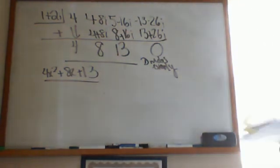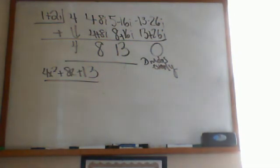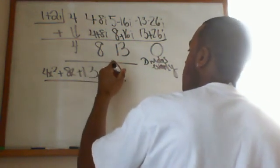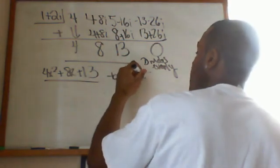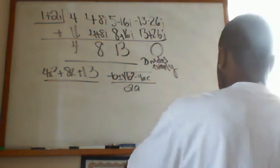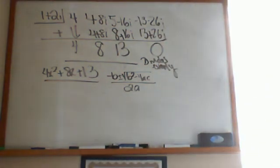As you can see, we cannot factor 4x² + 8x + 13 directly, because no factor combination of 13 and 4 gives 8 as the middle term. So I'm going to use the quadratic formula — negative b plus or minus the square root of b squared minus 4ac, all over 2a — to work that out. In the next video we'll continue and finish this problem. Thank you very much.